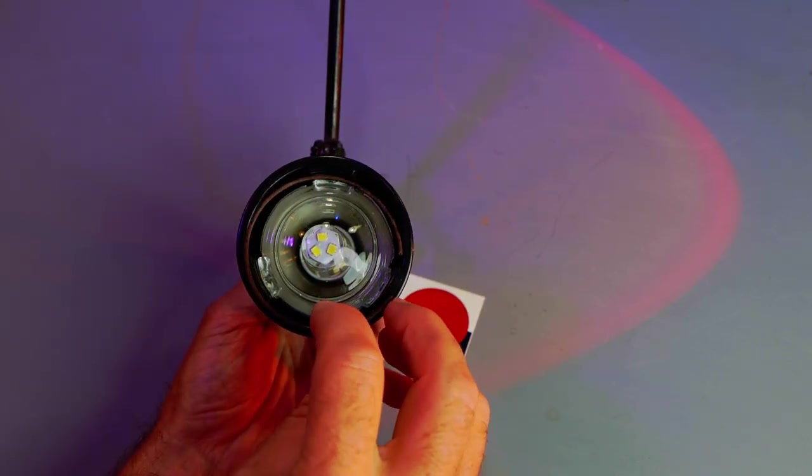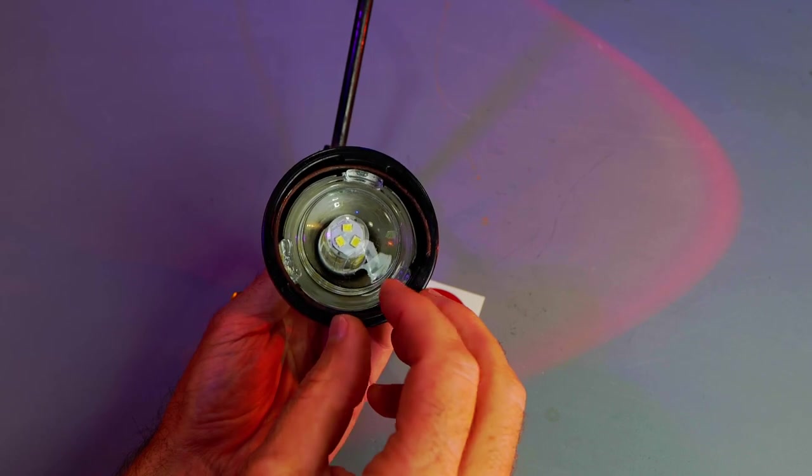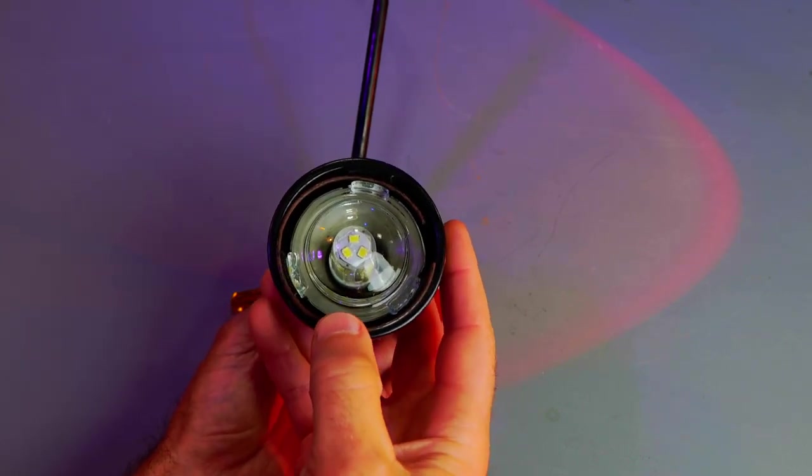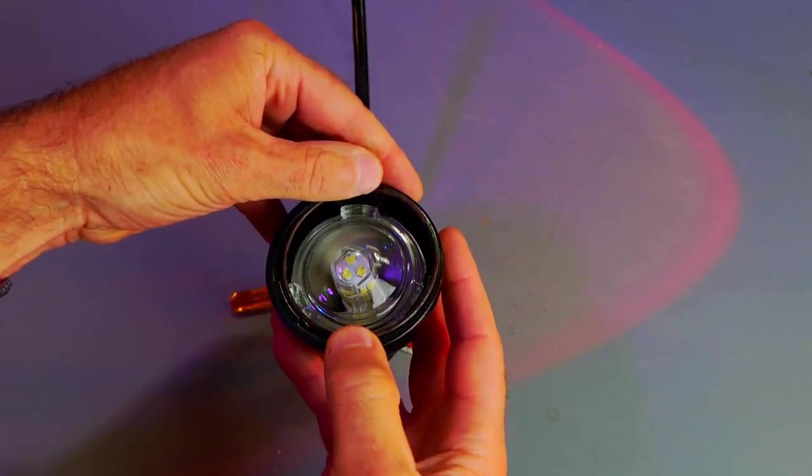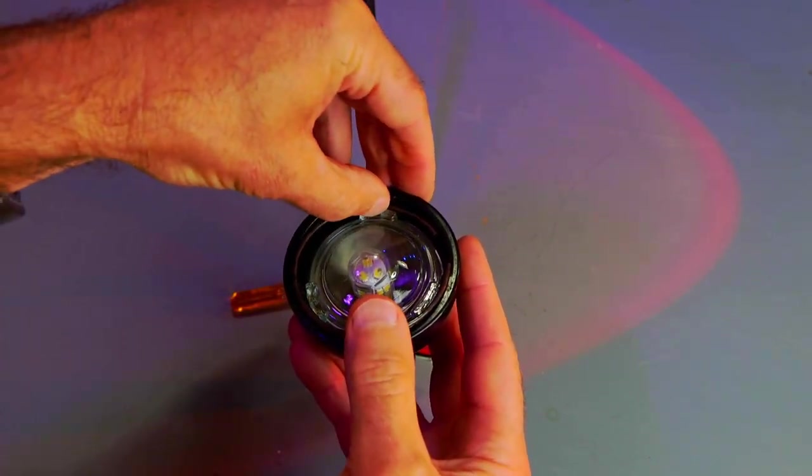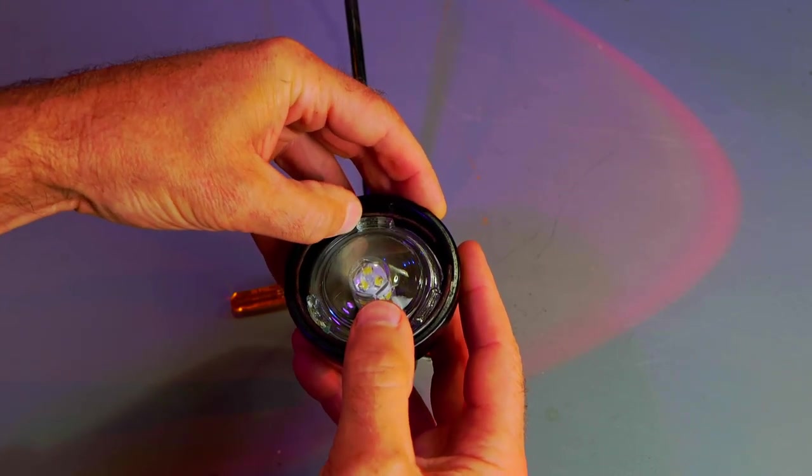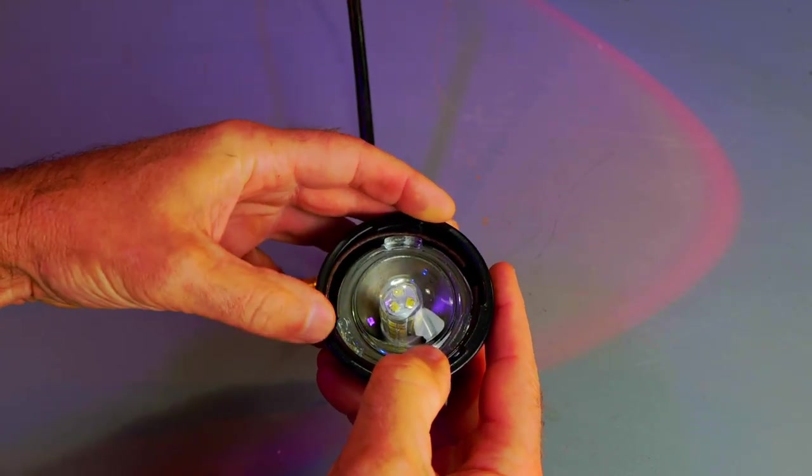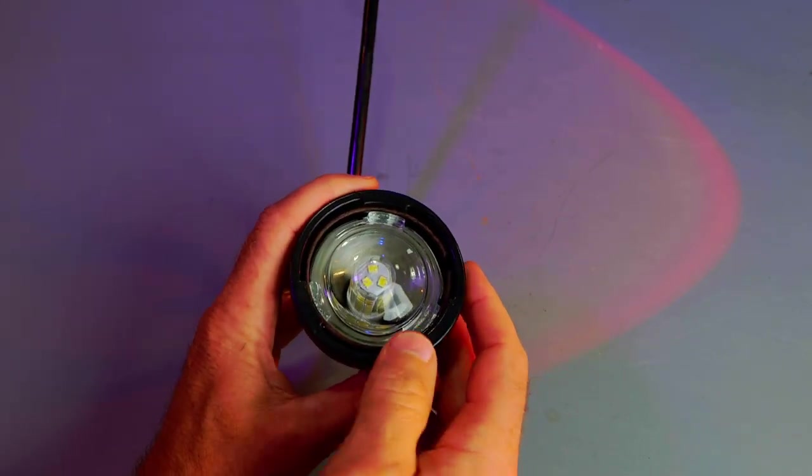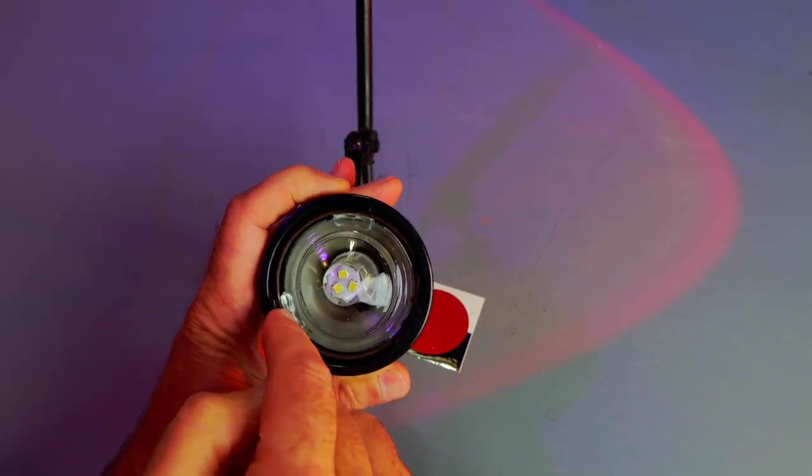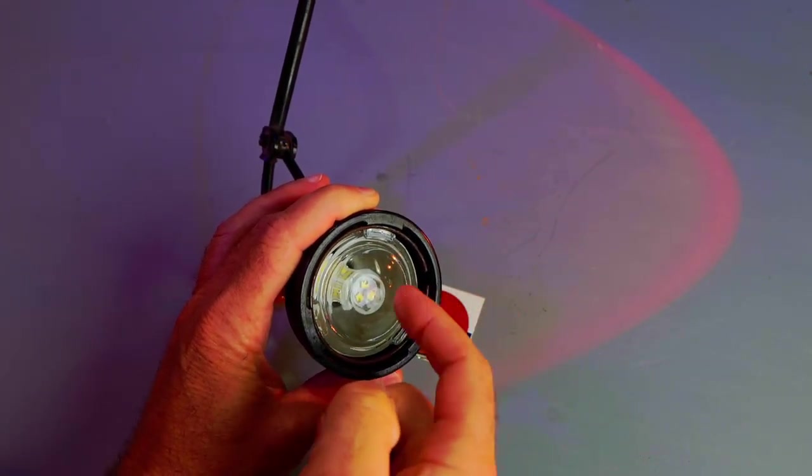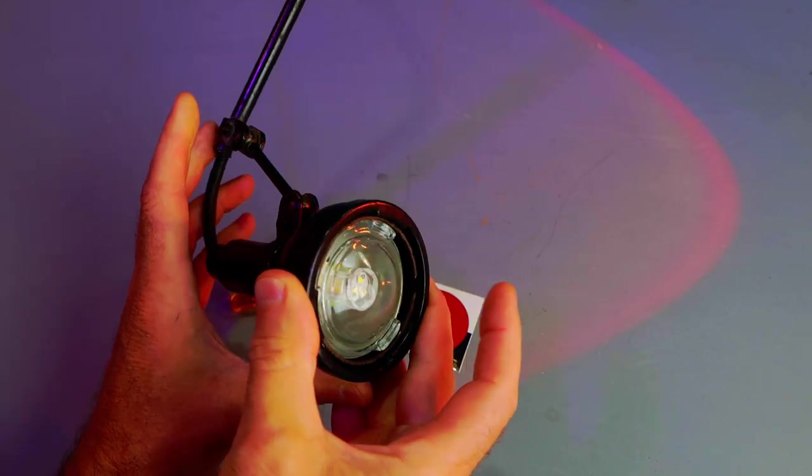And then this spring has a groove. And so you'll just start it in there in the groove. Let me start it right here. And then we'll just work it in place. So it's in one, two, three grooves. It's all the way around. And that's got that lens secure in there.